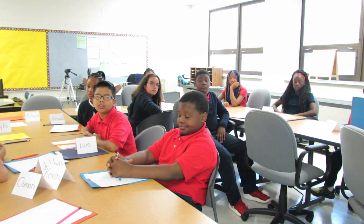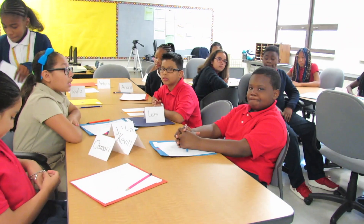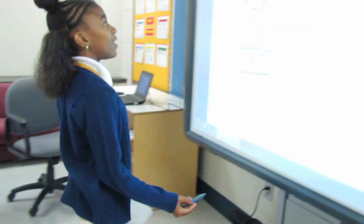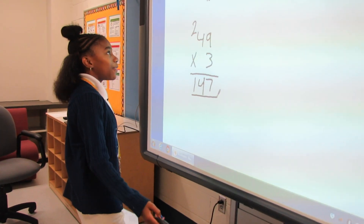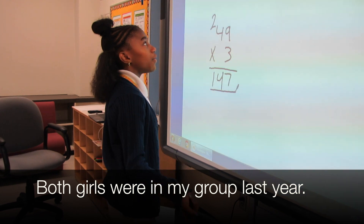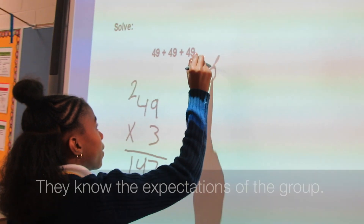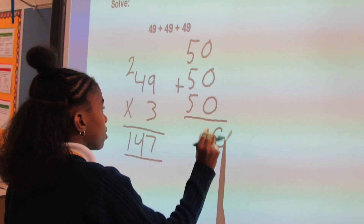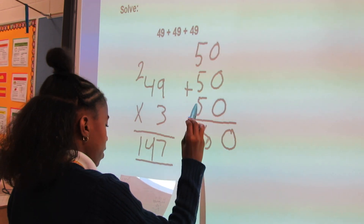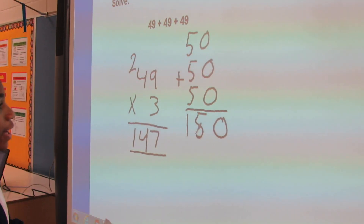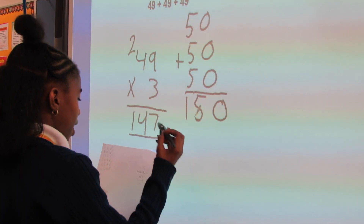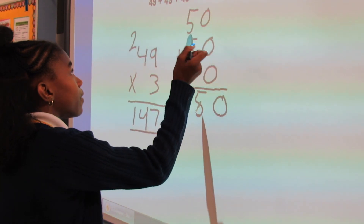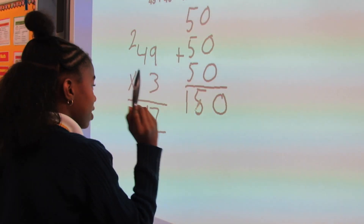Did someone solve this a different way? Kylie, will you come up here and share how you solved it? Can you speak louder, please? I saw that 49 was 1 less than 50. So I added 50 plus 50 plus 50, which got me 150. And then, since it was 1 less than 50, I just subtracted three more.